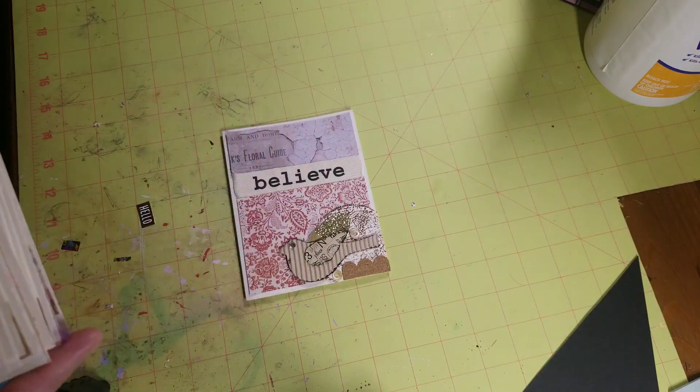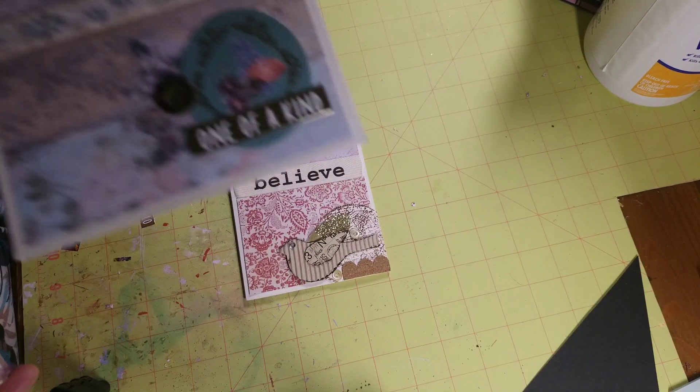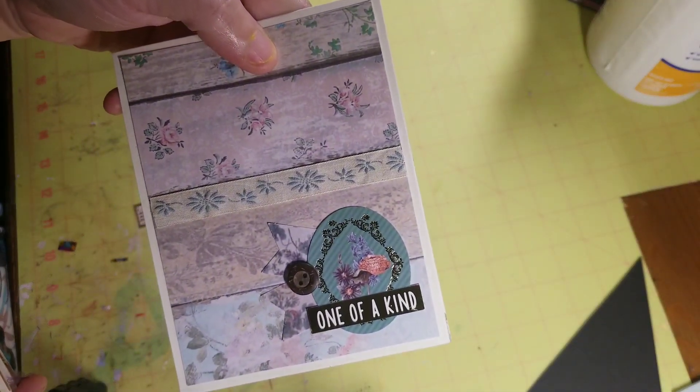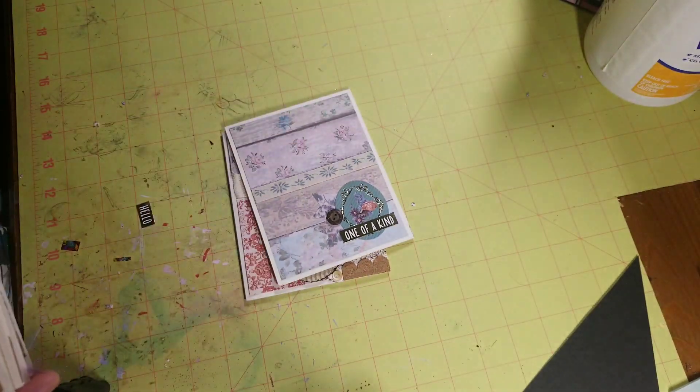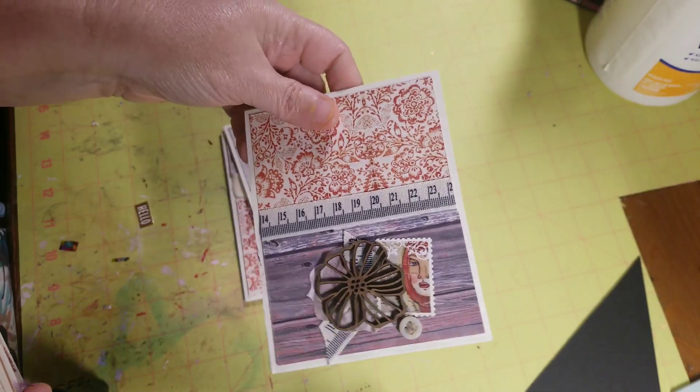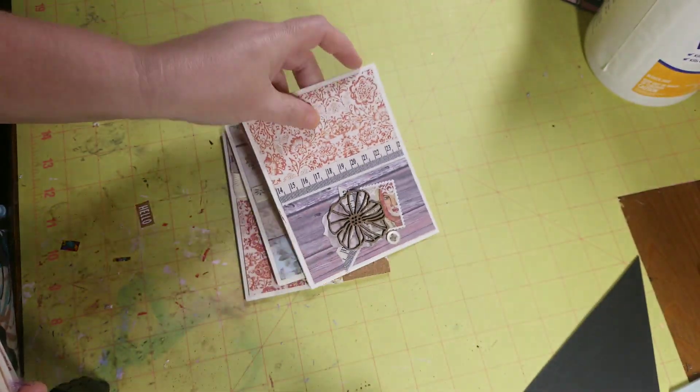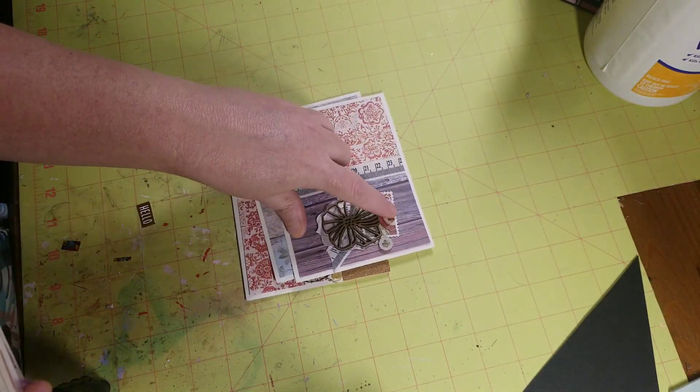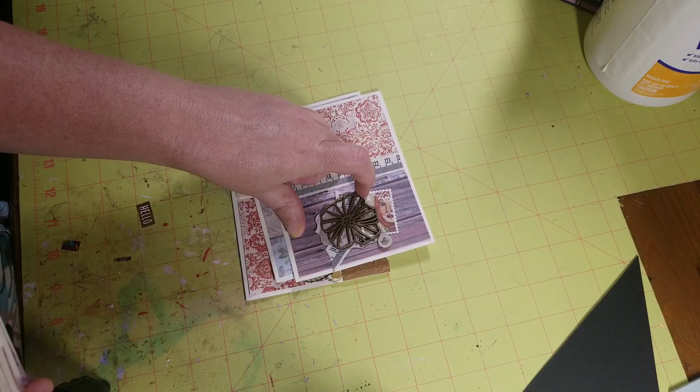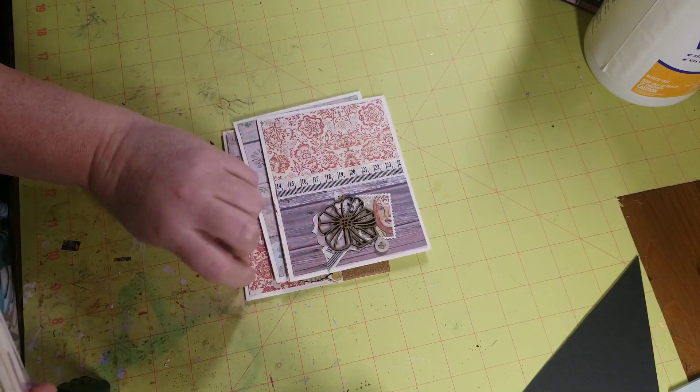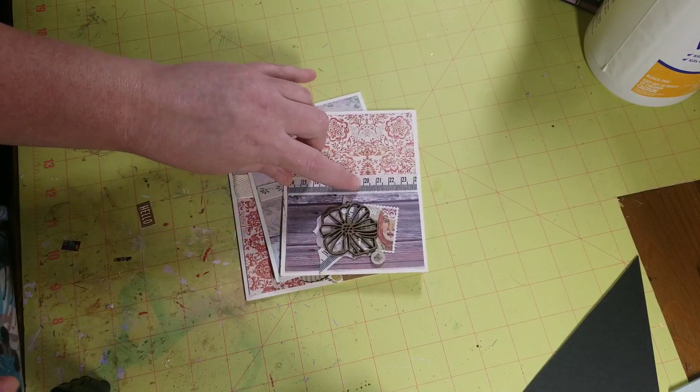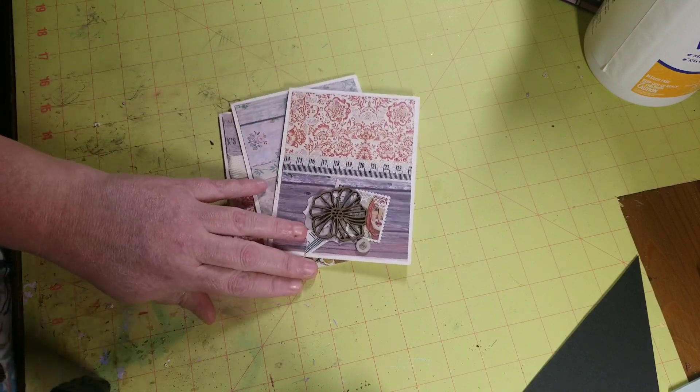And I pulled out my buttons, used up some ribbon. Those are stickers that kind of look like postage stamps. Someone had sent them to me. Someone had sent me these. I used up this trim that I had.